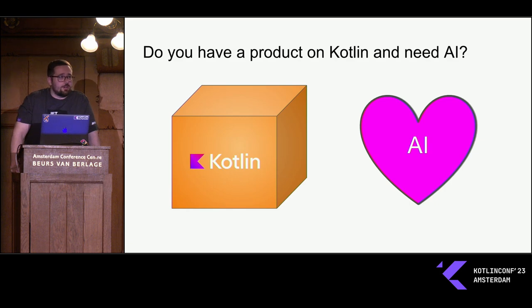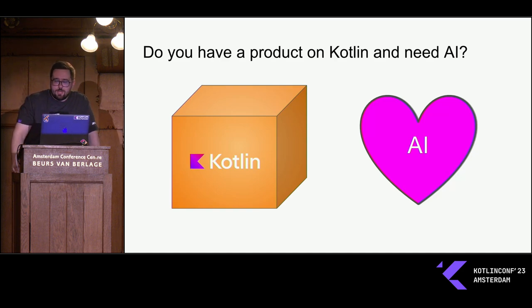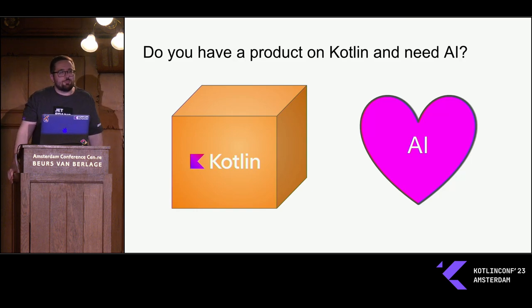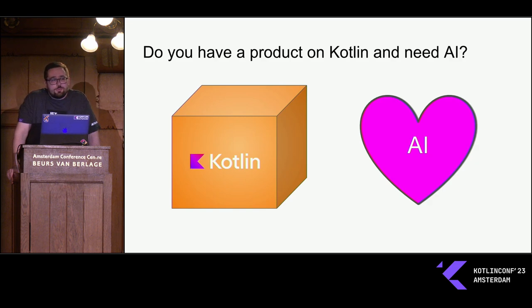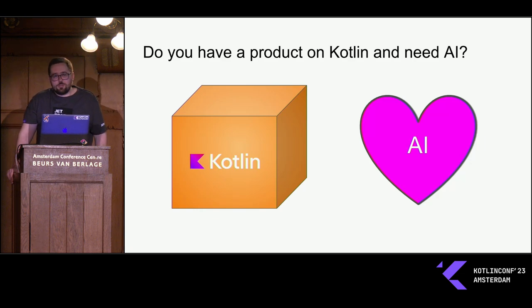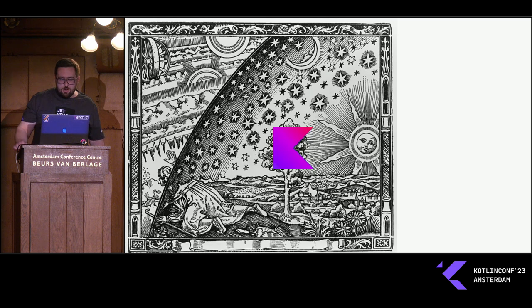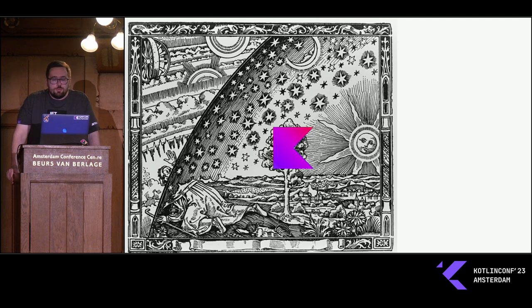Imagine you have a very typical Kotlin application with data classes, collections, Spring Boot starters, and so on - quite popular with Kotlin - but you need a little bit of AI. Not only ChatGPT, but something related to working with sound, music, images, videos, and so on, and you need to integrate that. If you go looking around, you will find a very good Python ecosystem. But what's the problem for Kotlin developers?